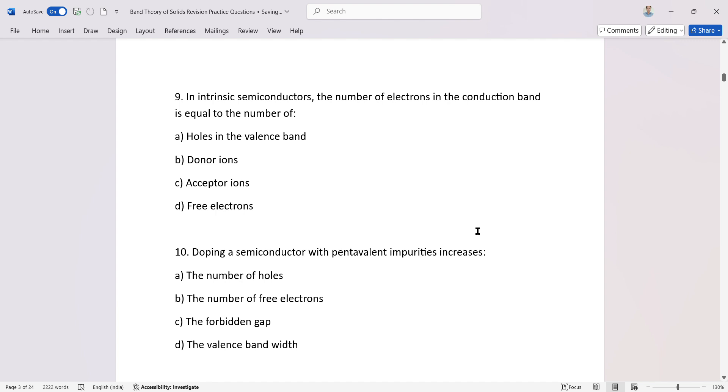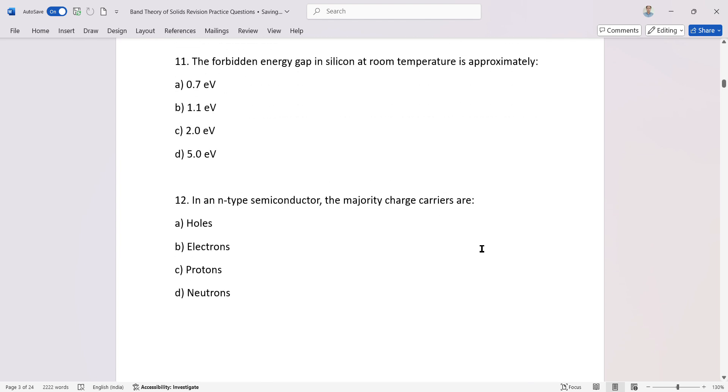Doping a semiconductor with pentavalent impurities increases the number of free electrons. The forbidden energy gap in silicon at room temperature is approximately 1.1 electron volts. In germanium, it is 0.7 electron volts. In an n-type semiconductor, the majority charge carriers are electrons.